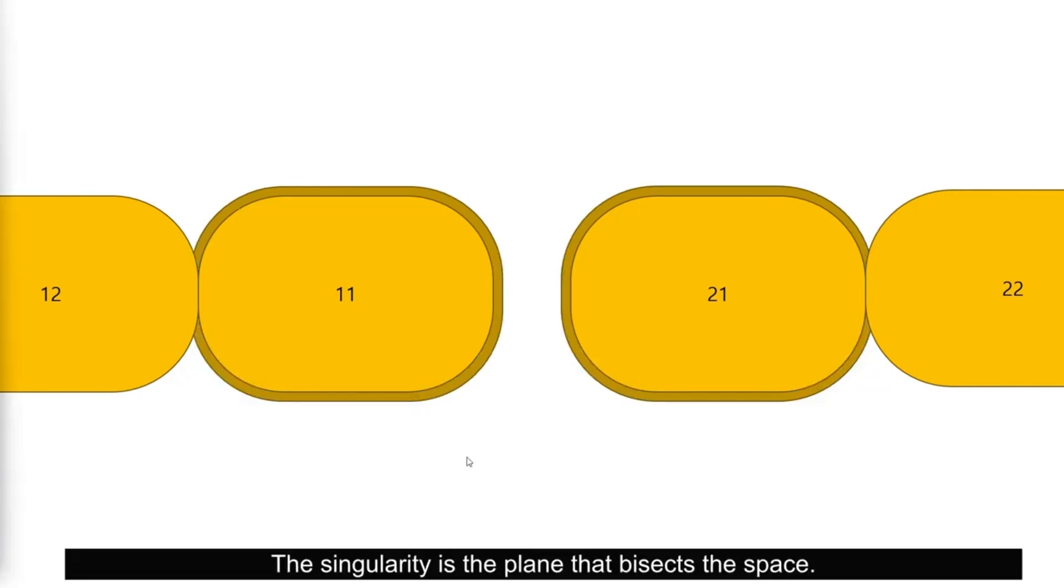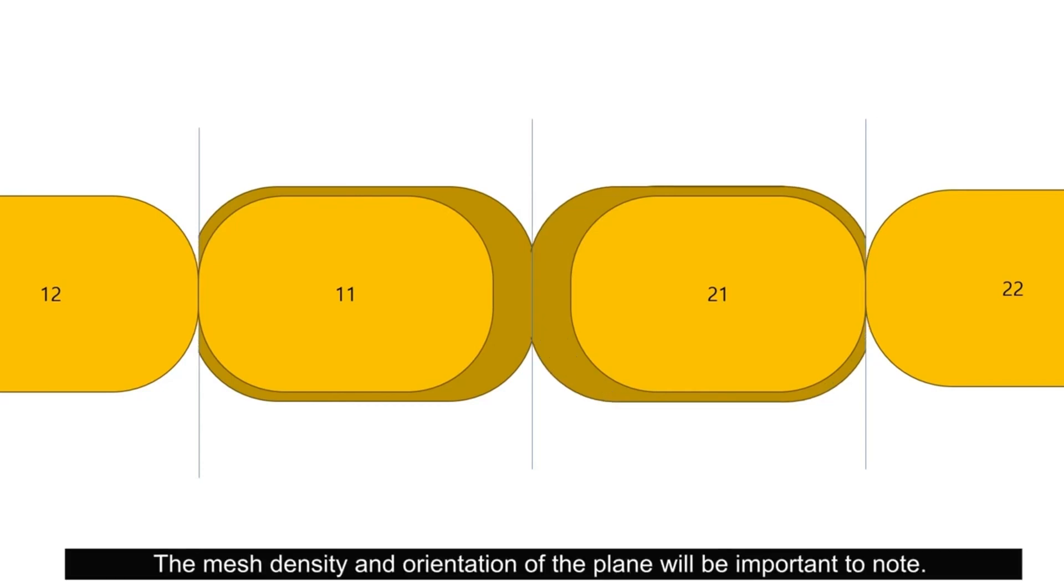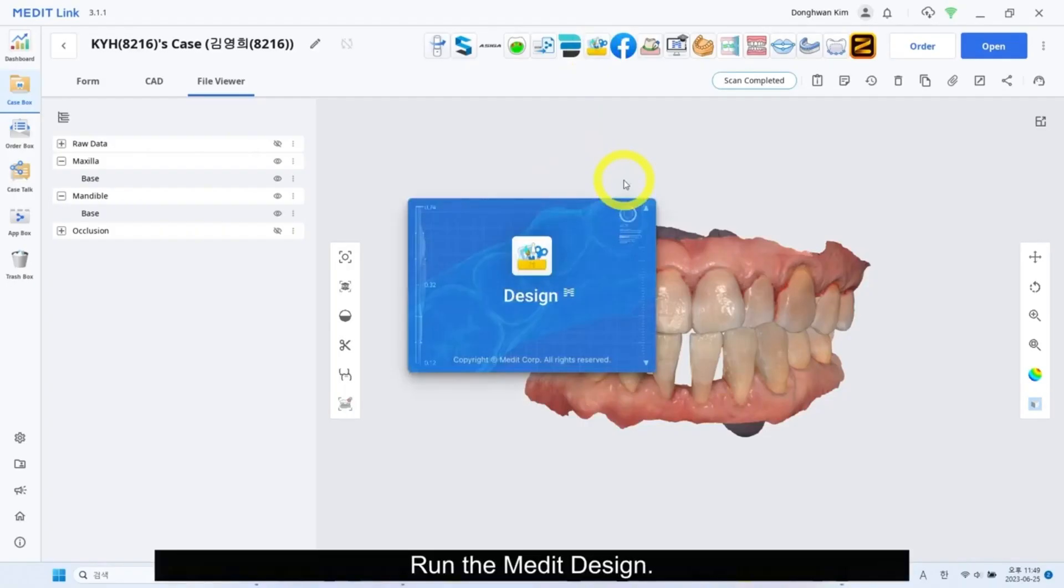The singularity is the plane that dissects the space. You can use this plane to design evenly distributed laminates and fit adjacent surfaces together. The mesh density and orientation of the plane will be important to note. Now on to Medit Design.